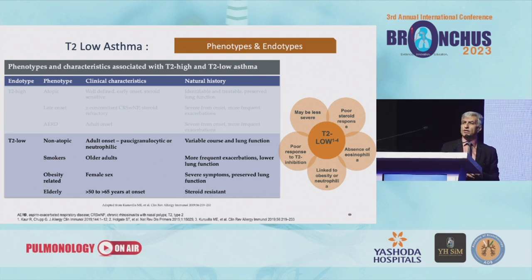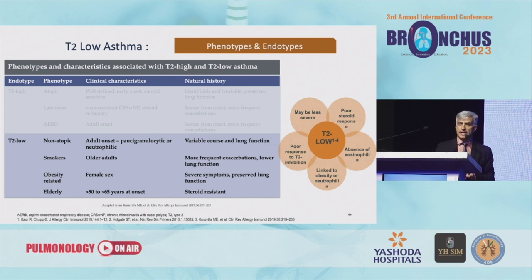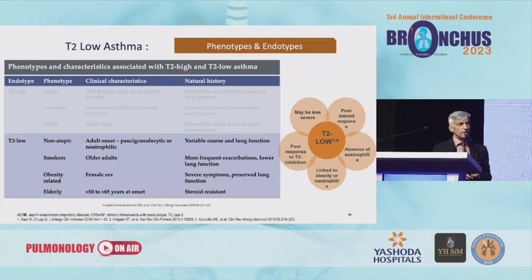What is T2 low asthma in your clinics? How do you know it is likely T2 low? These are smokers, elderly people, and those who are obese with asthma — paucigranulocytic or neutrophilic asthmatics. Difficult to recognize: you can predict an obese asthmatic, a smoker, or an elderly patient with not very bad lung functions but very troublesome symptoms as a typical prototype of T2 low asthma.